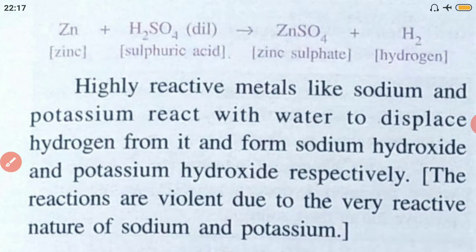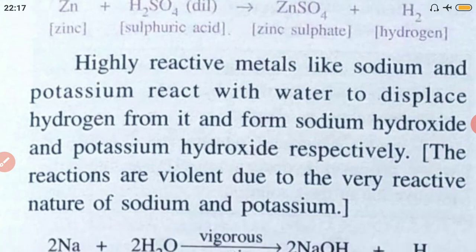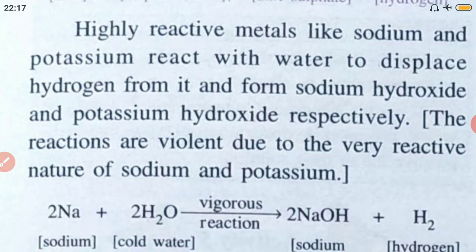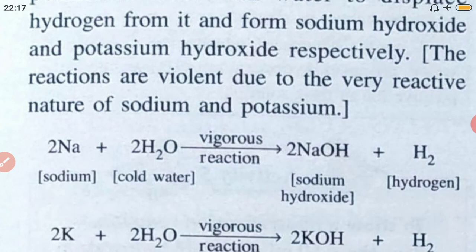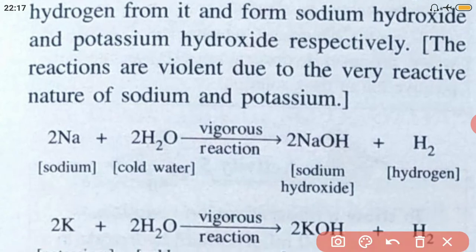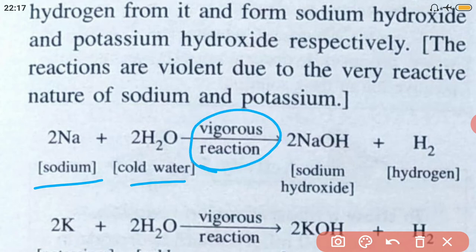Highly reactive metals like sodium and potassium react with water to displace hydrogen from it, forming sodium hydroxide and potassium hydroxide respectively. The reactions are violent due to the very reactive nature of these metals. Sodium reacts with cold water in a vigorous reaction — evolving lots of heat energy — to form sodium hydroxide and hydrogen gas.